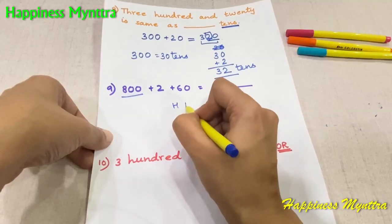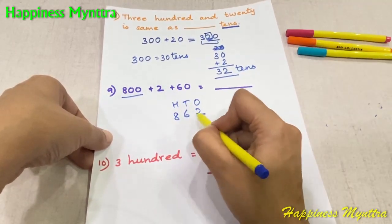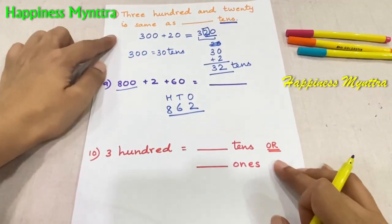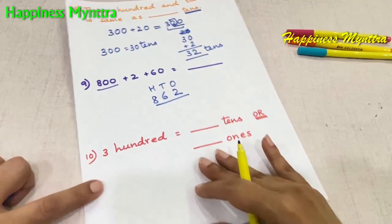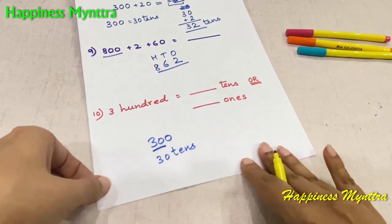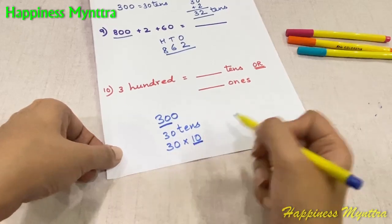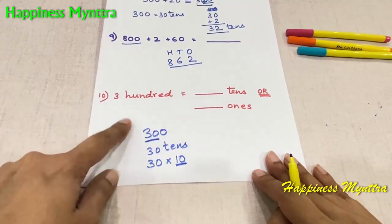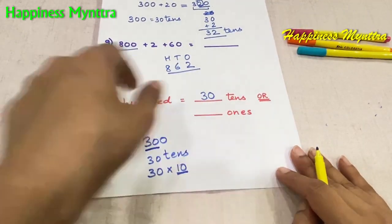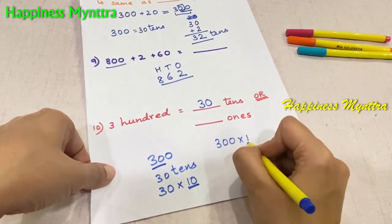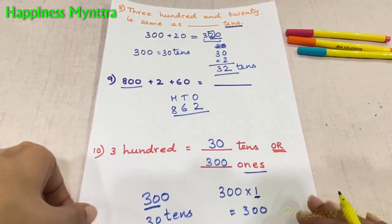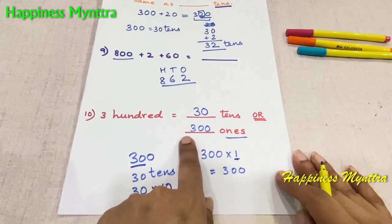Question 10: 300 is equal to dash tens. This is again the regrouping concept. When we have 300, we know it is 30 tens — because 30 times 10 equals 300. So 300 is actually 30 tens. And how many ones is 300? When we express 300 in terms of ones, the answer is 300 ones. So 300 equals 30 tens or 300 ones.